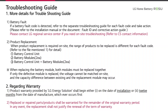When product replacement is required on-site, the range of products to be replaced is different for each fault code. It can be the battery control unit, the battery modules, or both the battery control unit and the battery modules. When replacing the battery modules, both modules have to be replaced together. If only the defective module is replaced, the voltage cannot be matched on-site and a capacity difference between the existing and the replacement module may occur.